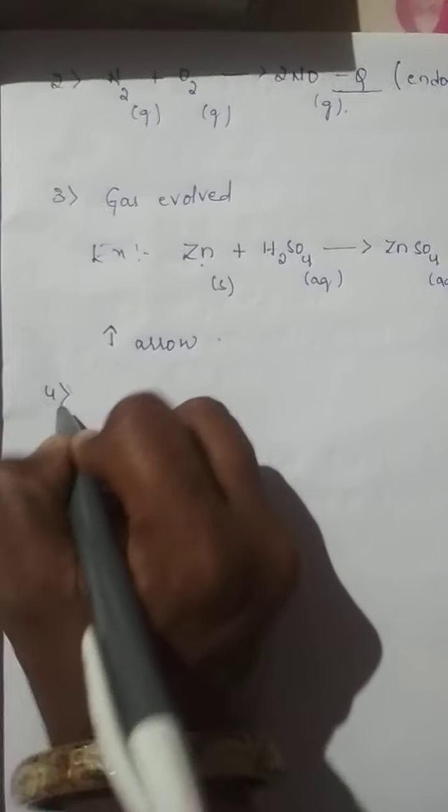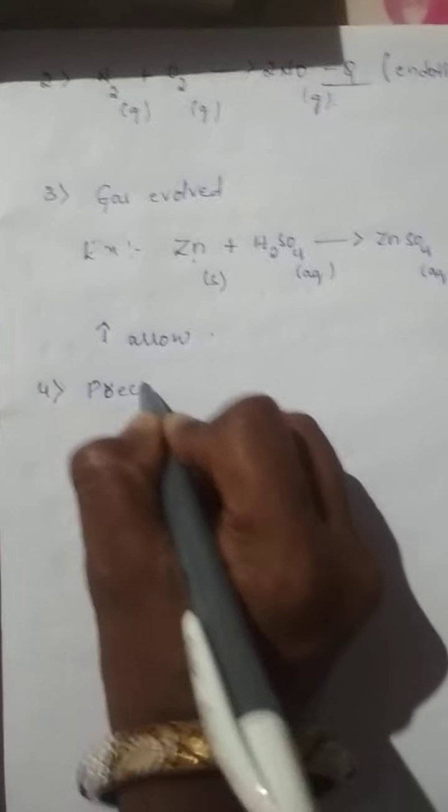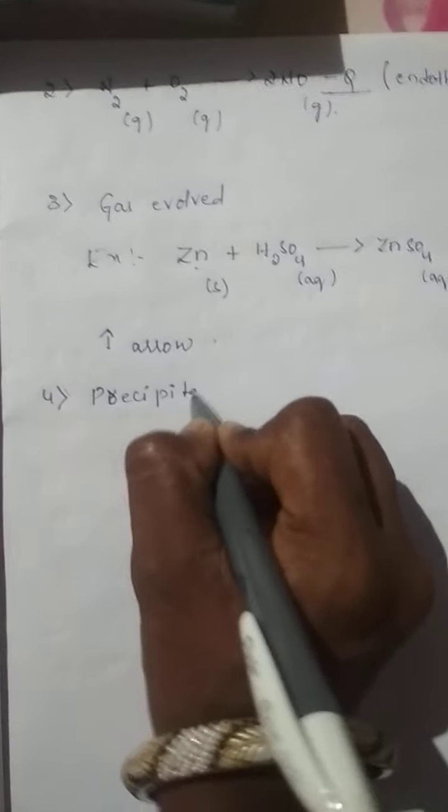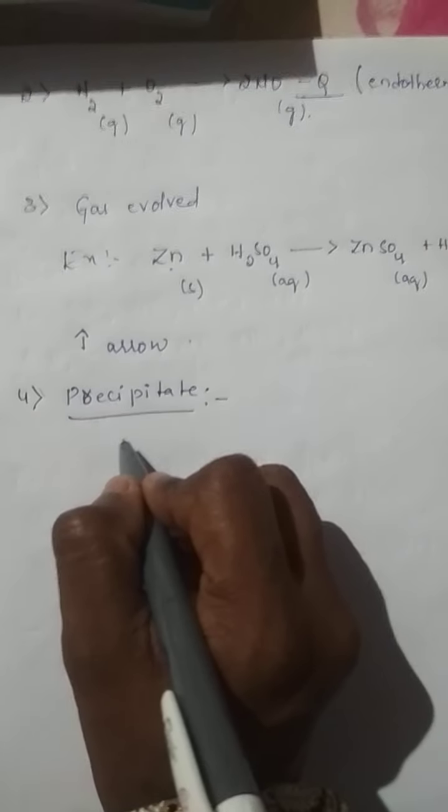Fourth one, precipitate. How precipitate is formed? Precipitate is represented by downward arrow.